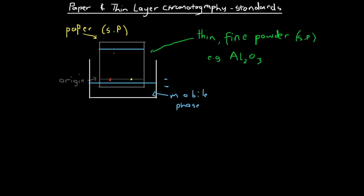We let the chromatogram run until the solvent front gets fairly high, but not all the way to the top of the paper. As the solvent front moves up, the spots of solution spread out into their colors. For example, a yellow dot may travel to one height, while a red dot may break down into a yellow component at the same height and a green component that travels a little further.